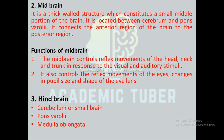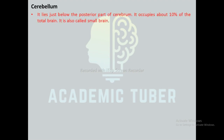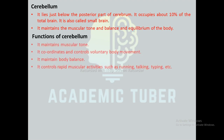The hindbrain has three parts. First, the cerebellum lies just below the posterior part of the cerebrum, occupying about 10% of the total brain, and is also called the small brain. It maintains muscular tone, balance, and equilibrium. Its functions include coordinating and controlling voluntary body movement, maintaining body balance, and controlling rapid muscular activity such as running, talking, and typing.